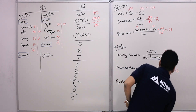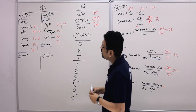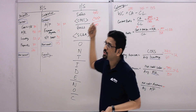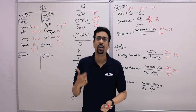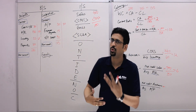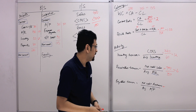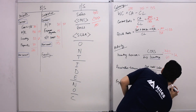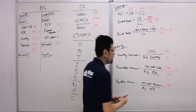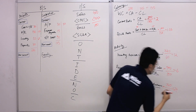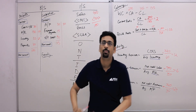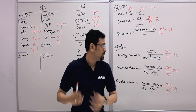For payables turnover, we look at purchases. Since inventory remained the same, purchases equal COGS — net credit purchases of 720. Average payables: 30 plus 30 divided by 2 equals 30. So 720 divided by 30 gives us 24 — the business bought goods from vendors on credit and paid them 24 times during the year, meaning they paid quite fast.